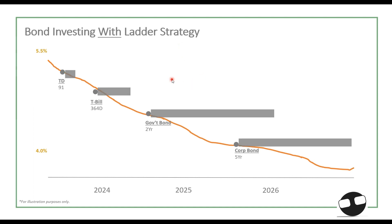If you proceed with the ladder strategy, the best approach is to consider longer tenors — adding duration to your portfolio. For example, if presented with a one-month treasury bill versus a one-year treasury bill, you should prefer the one-year tenor. If you grab that one-year treasury bill and rates keep dropping, you've locked in that rate for a full year, securing those gains. Similarly, in 2025 you could grab a two-year government bond and lock in that yield.